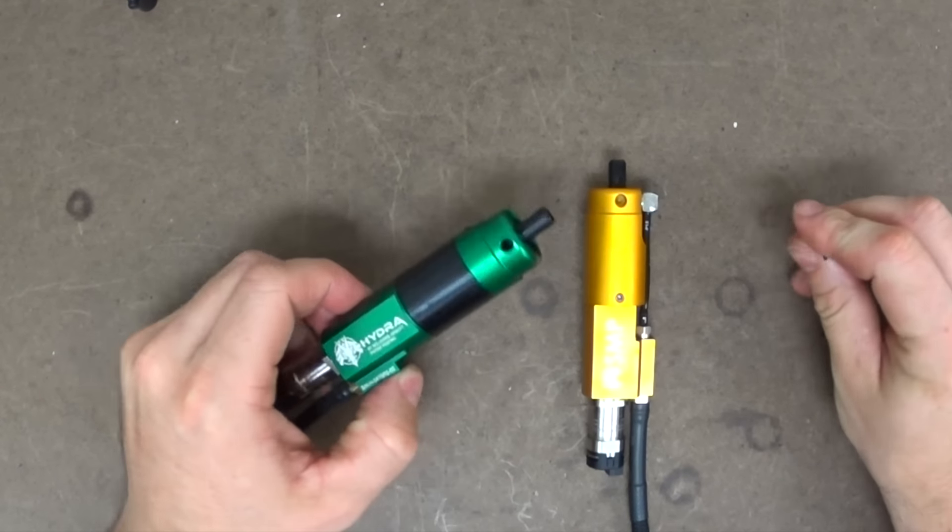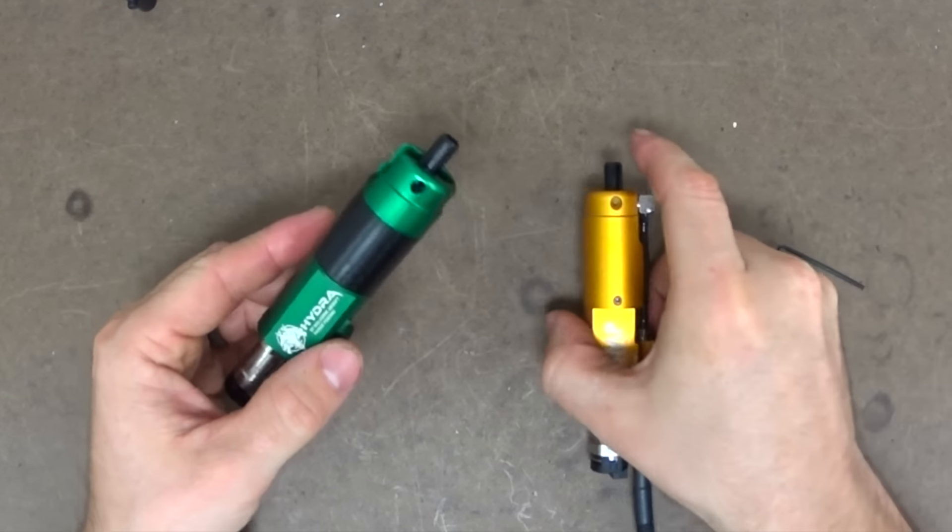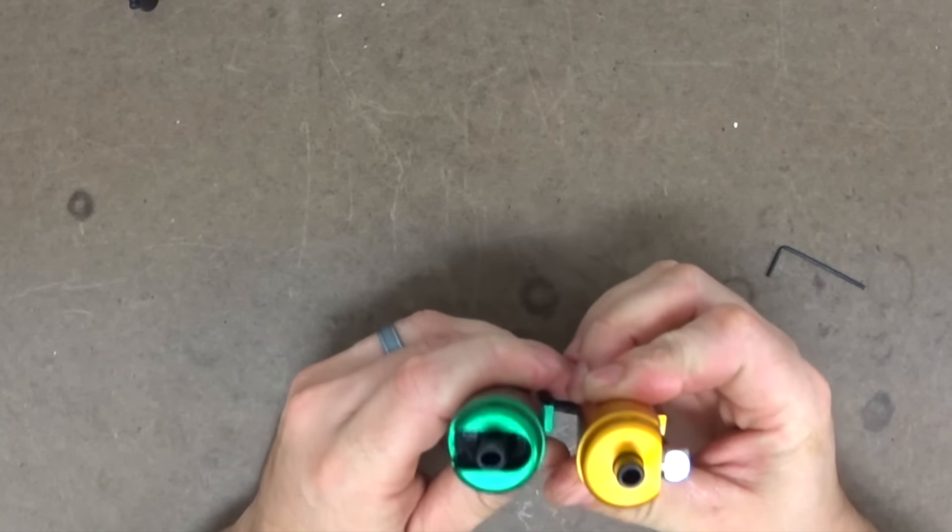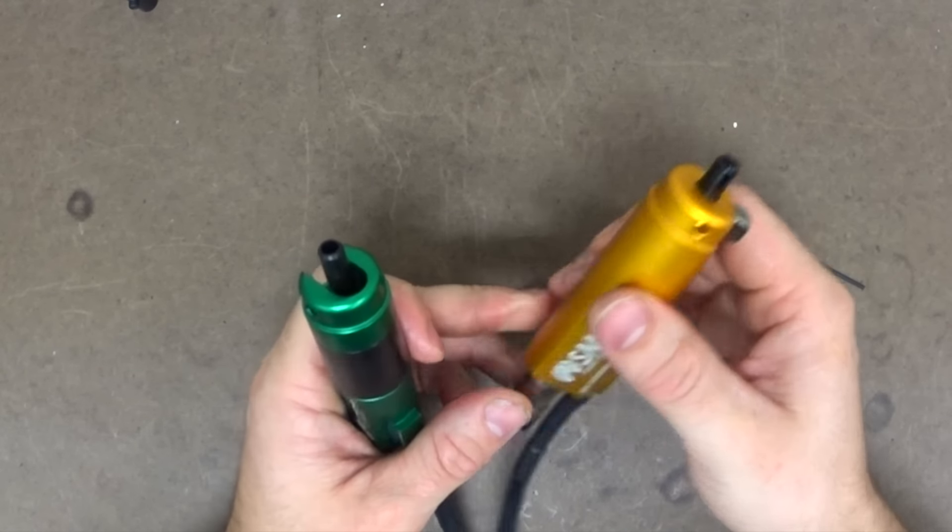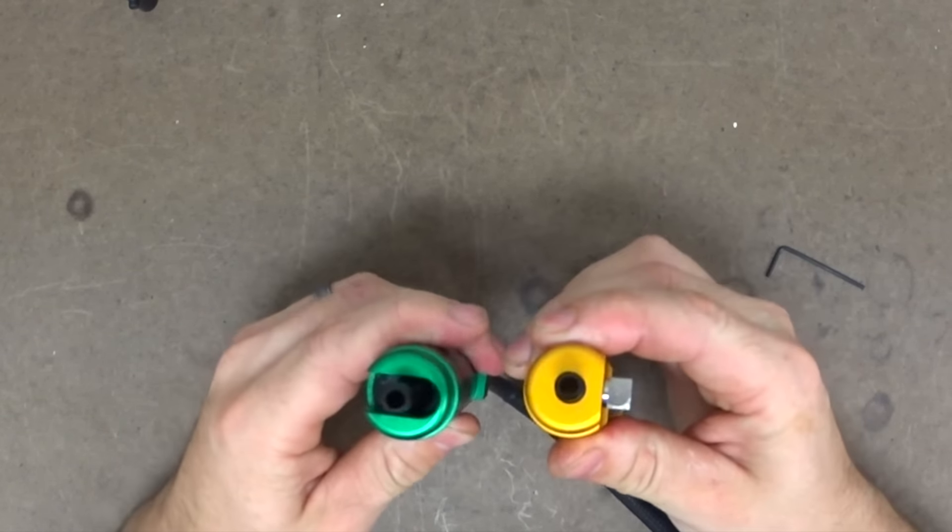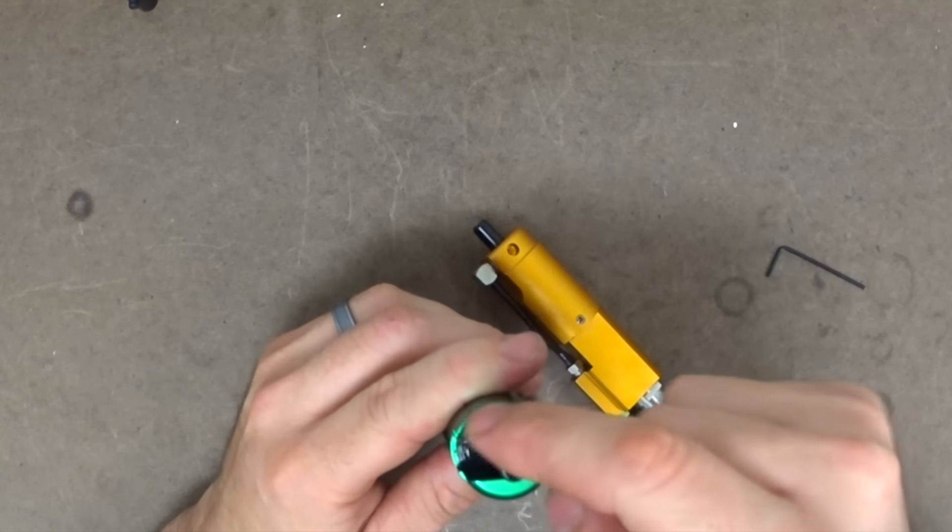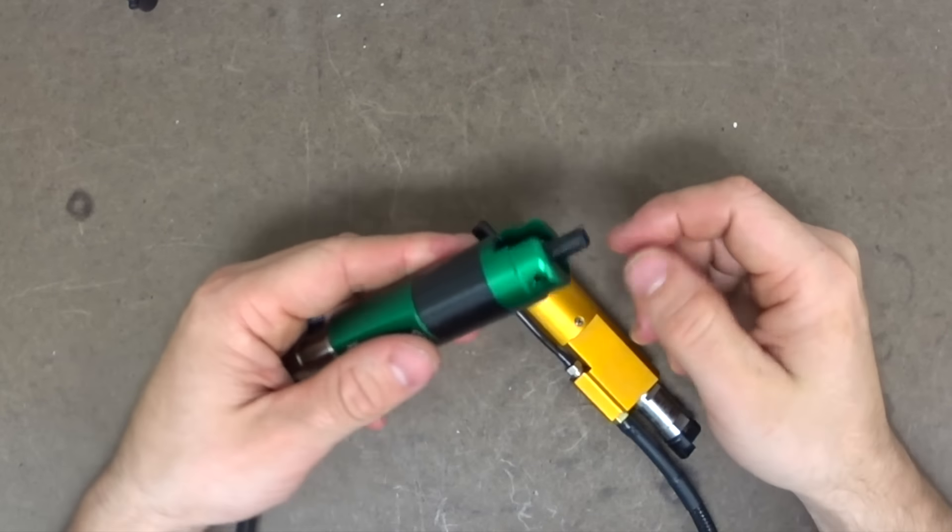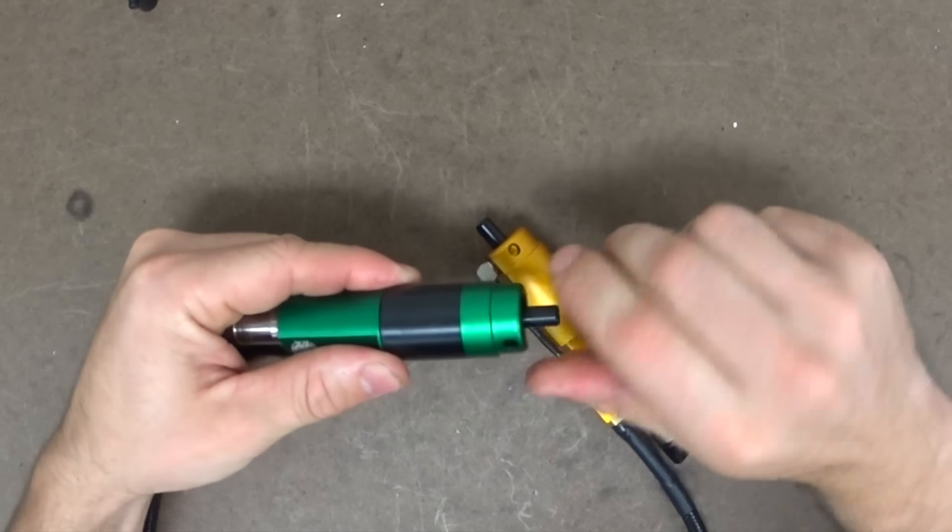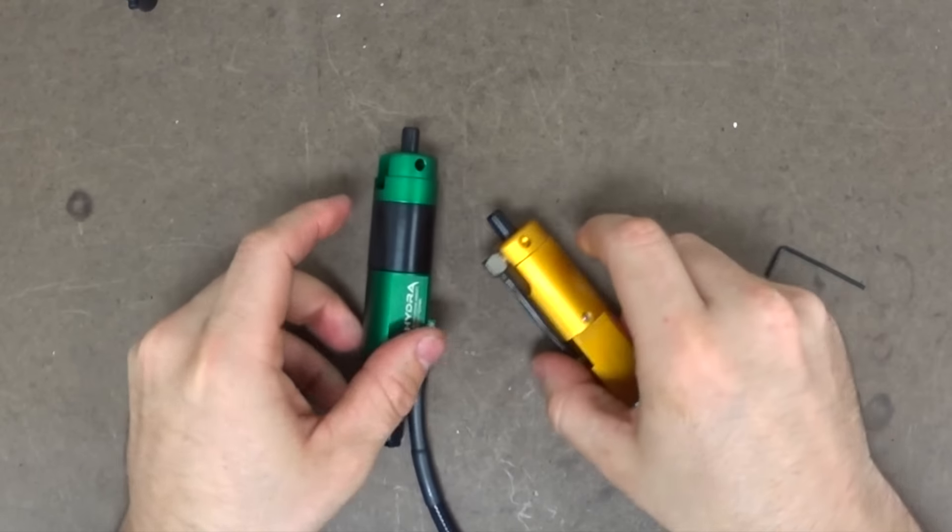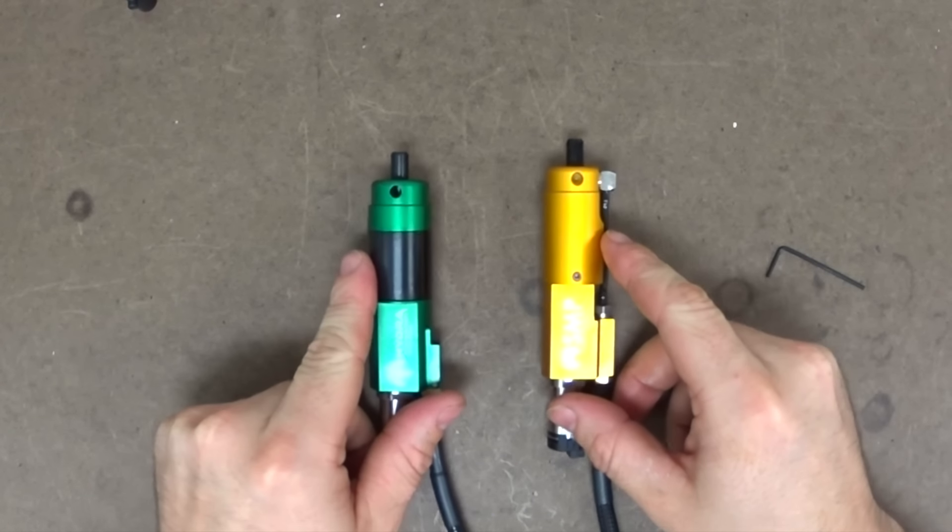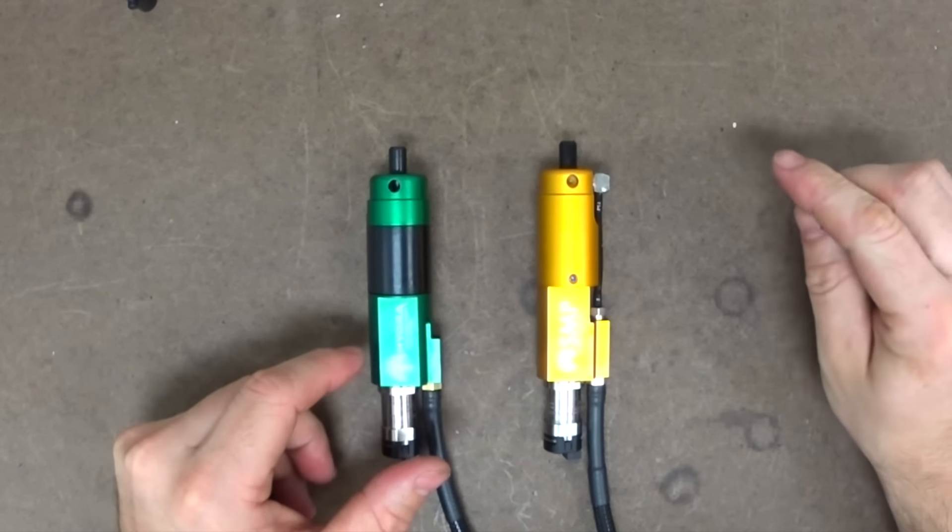First thing you'll notice before you even start taking them apart is that the front looks different. On the S&P, the front is one solid piece. On Hydra, there's this interesting-looking cutout, this U-shaped cutout, and then the front rotates. So that's a little different, and we'll talk about why we did that in just a couple minutes.